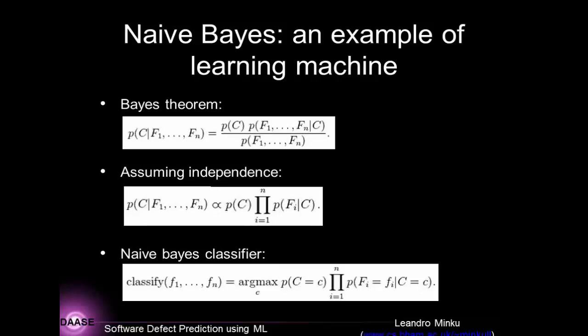I'm going to talk about one example of a learning machine that can be used for this: Naive Bayes. I selected one of the simplest learning machines available. Despite being simple, it can achieve reasonably good performance for software defect prediction. There are other learning machines that are more complex and can achieve better accuracy, but this is a good one to start with, especially if you're not familiar with machine learning.